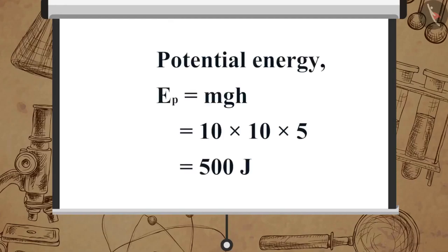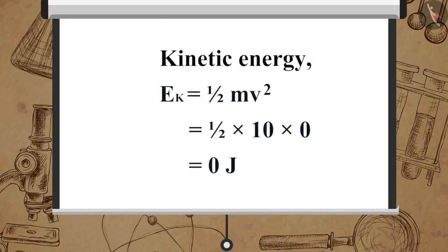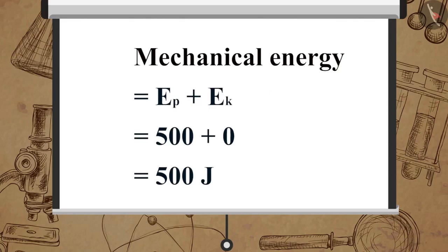Potential energy: EP = MgH = 10 × 10 × 5 = 500 J. Kinetic energy: EK = ½mv² = ½ × 10 × 0 = 0 J, since the object starts from rest. Mechanical energy = EP + EK = 500 + 0 = 500 J.